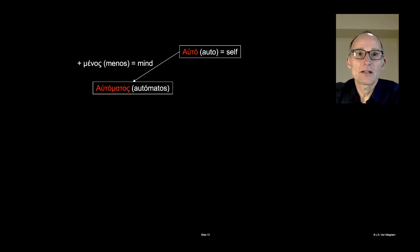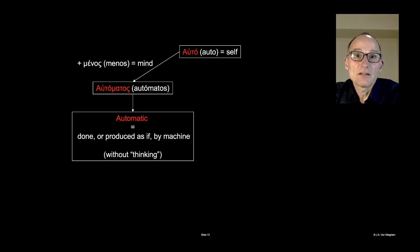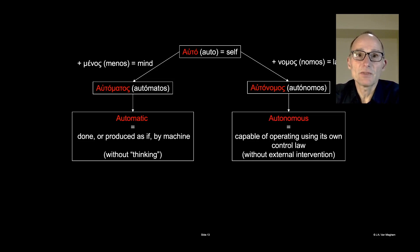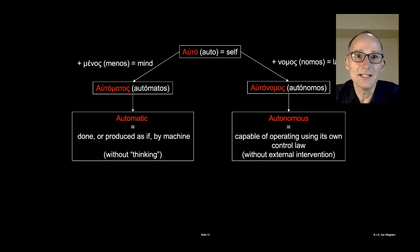This tells us that automatic means done or produced as if by machine — sometimes we say without thinking. In contrast, if we add the word nomos to auto, we get the word autonomous. Autonomous has to do with the fact that you are capable of operating using your own laws, your own control laws, meaning without anybody else's intervention.